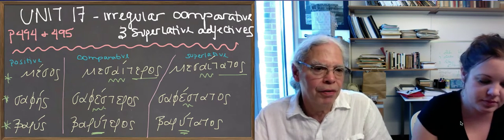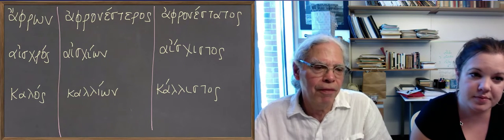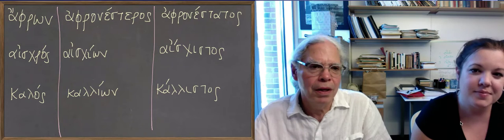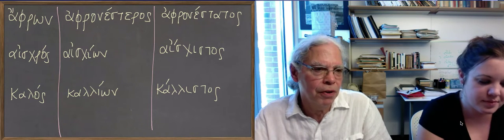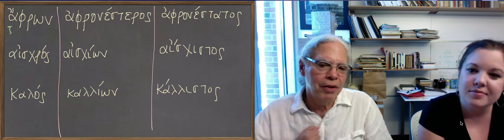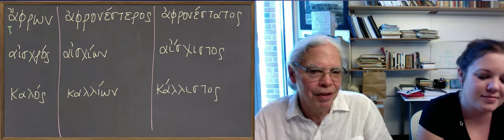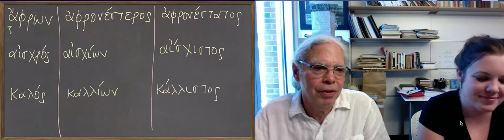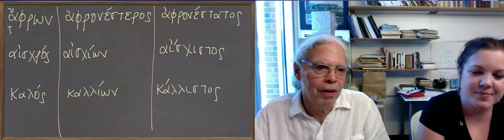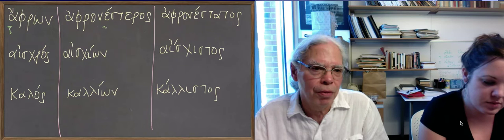So moving on, there are some others that are similar. There's afrohn, remember this word? It means foolish. It's the negative prefix a, and frohn is the word for intelligence. Remember, there's this notion that there's intelligence in your chest, not up here. Anyway, so if you're mindless, you're afrohn, and then the comparative is afrohnesteros, as though it was an e-stem.